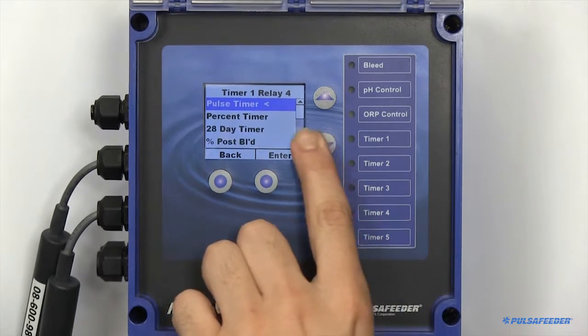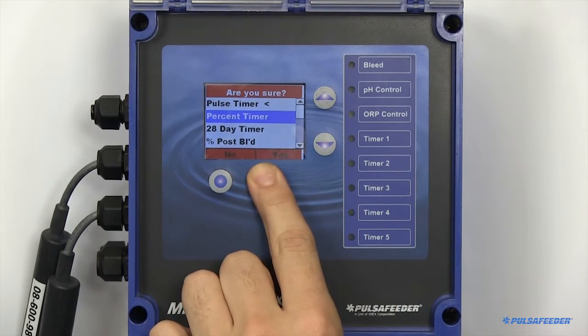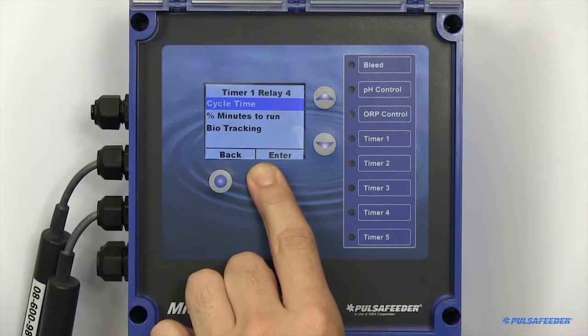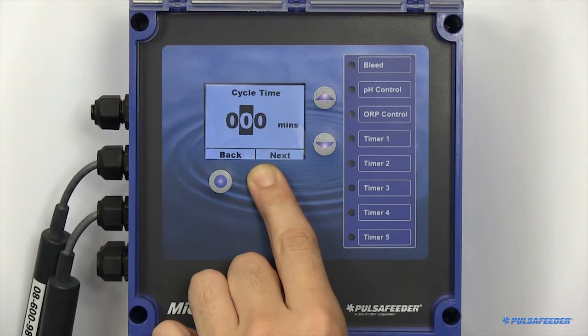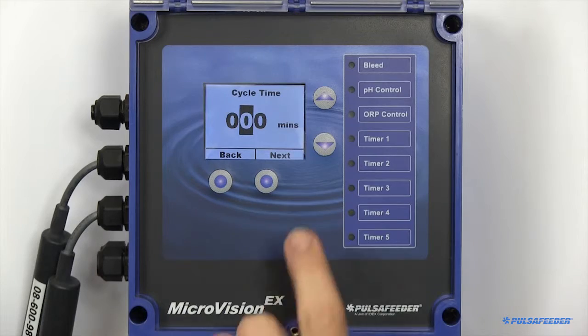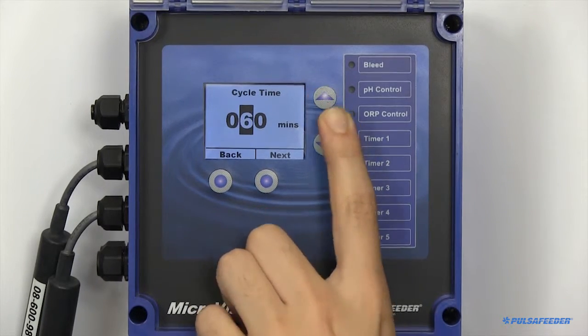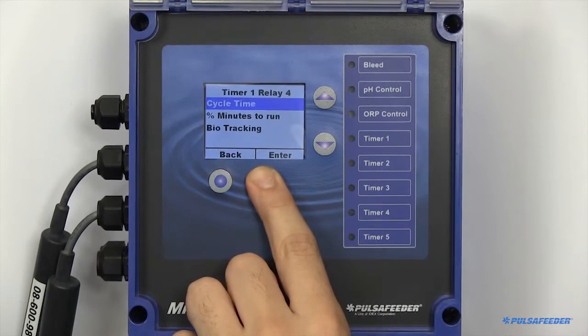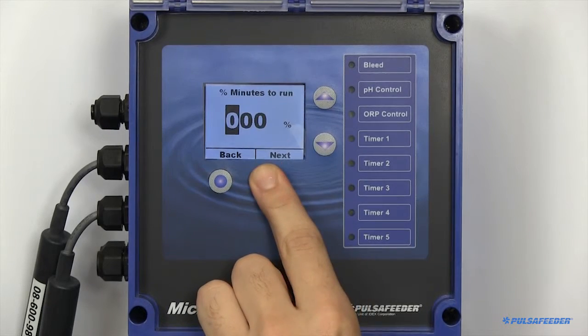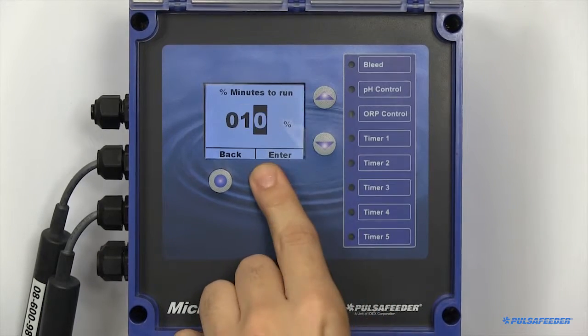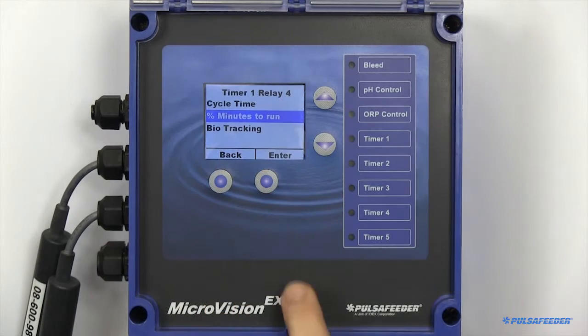There are two parameters when setting up a percent timer. You will need to set your cycle time and your percentage of minutes you would like the timer to run. For example, 10% of 60 minutes would be 6 minutes of feed time every 60 minutes.